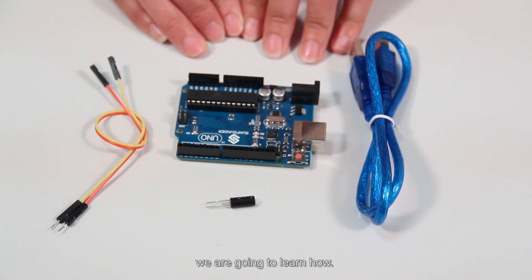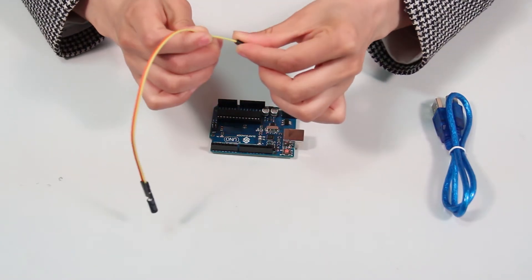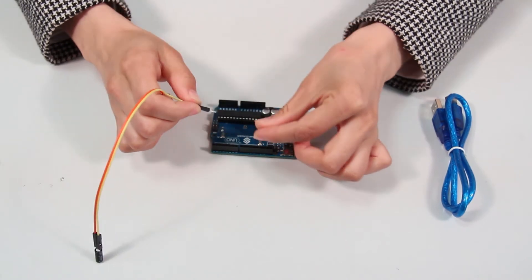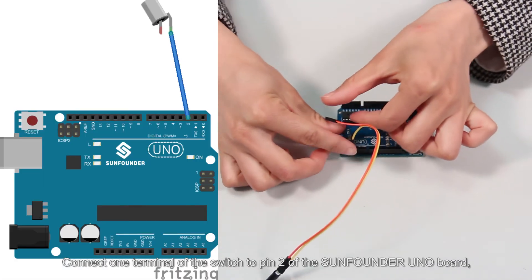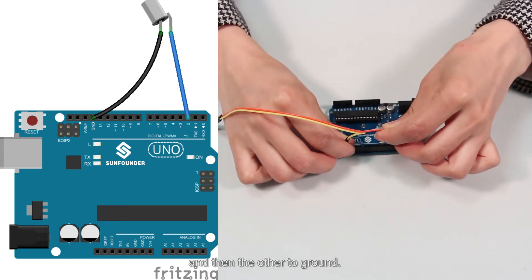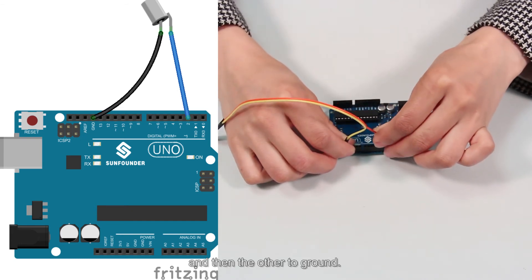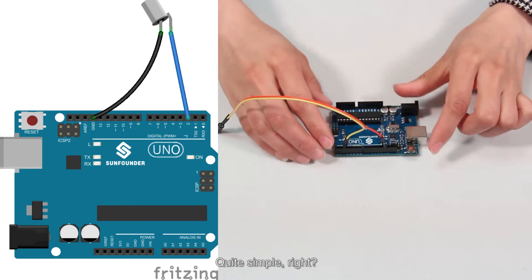Knowing why, we are going to learn how. Let's build the circuit, which is extremely easy. Connect one terminal of the switch to pin 2 of the SunFounder UNO board, and then the other to ground. Quite simple, right?